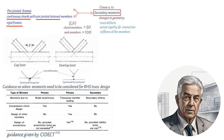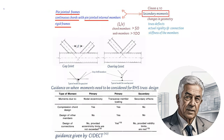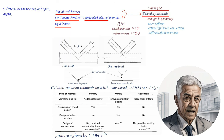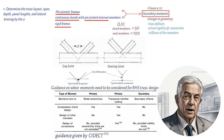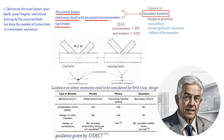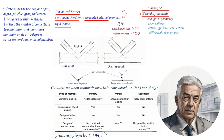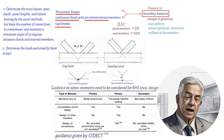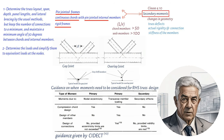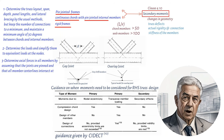To obtain an efficient and economical structure, the analysis and design of a truss should be approached in the following sequence. First, determine the truss layout, span, depth, panel lengths, and lateral bracing by the usual methods, but keep the number of connections to a minimum and maintain a minimum angle of 30 degrees between cords and internal members. Next, determine the loads and simplify them to equivalent loads at the nodes.